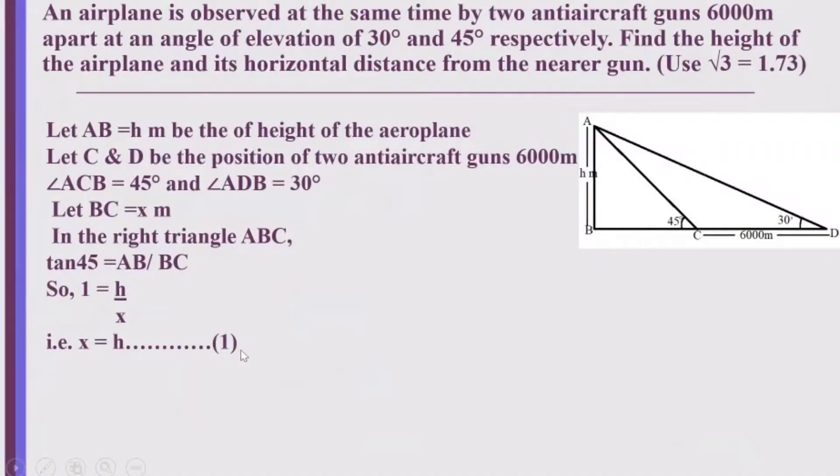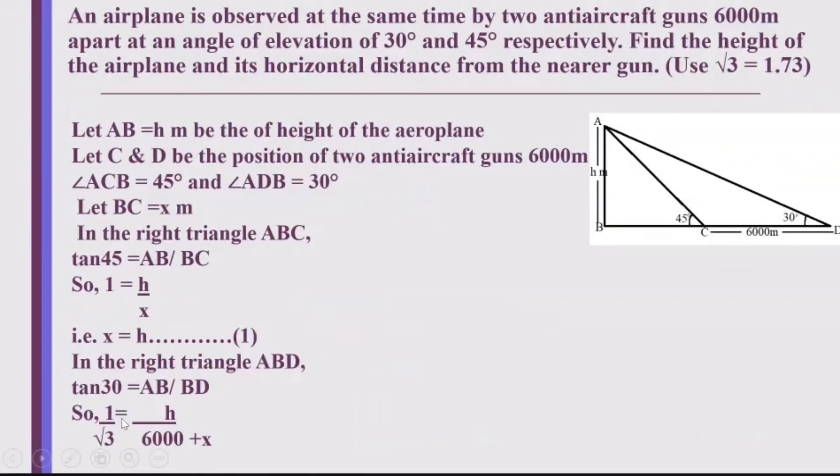Now, I take up the second triangle ABD. In triangle ABD, tan 30 will be equal to AB upon BD. AB is H, BD is 6,000 plus X. So, I get in the right triangle ABD, tan 30 is equal to AB upon BD which is equal to 1 by root 3 is equal to H upon 6,000 plus X. I take root 3 to this side and 6,000 plus X to that side. And I get 6,000 plus X is equal to H root 3. This becomes my second equation.